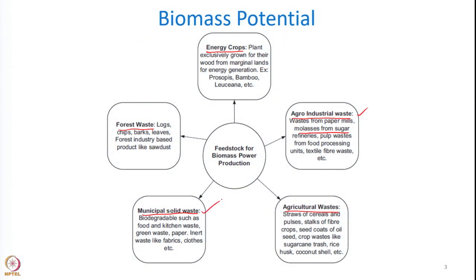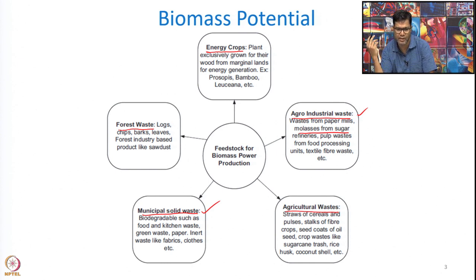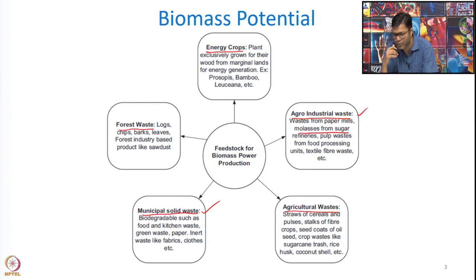Municipal solid waste includes all carbonaceous products with carbon as a source which we can use to harness hydrogen. When we discuss the overall chemistry, we will appreciate that whatever waste is carbonaceous in nature can be used to harvest hydrogen — it does not matter whether hydrogen is already present in the feedstock. This includes biodegradable waste, green paper, fabrics, cloths, and even plastics, which are carbonaceous in nature and have potential to yield hydrogen.